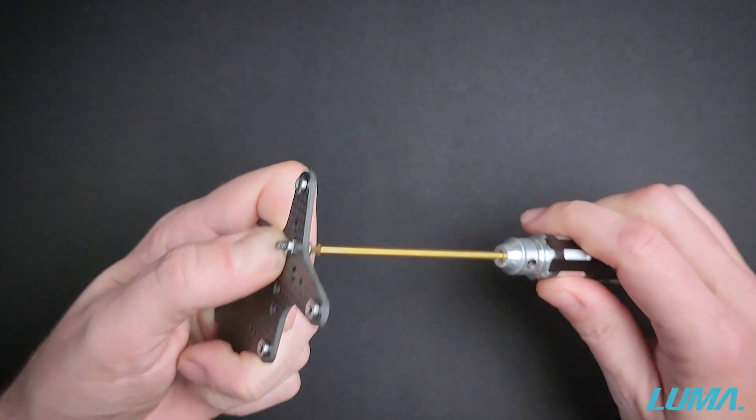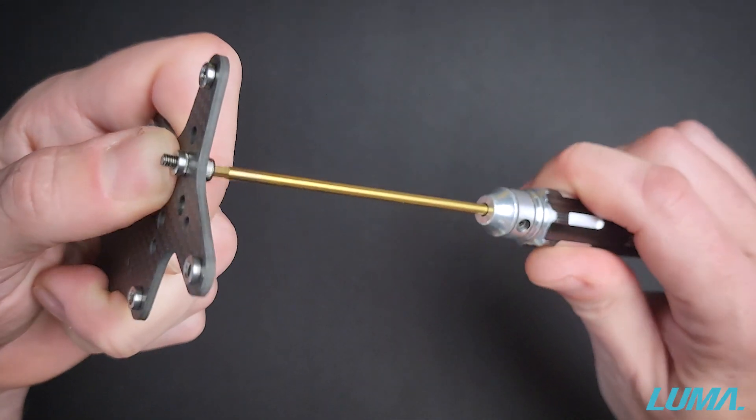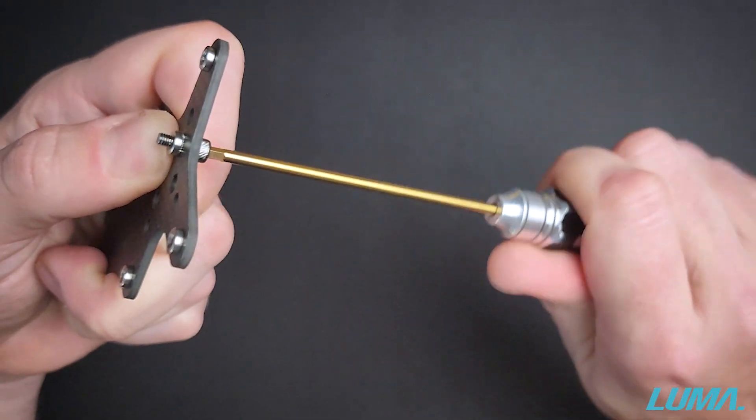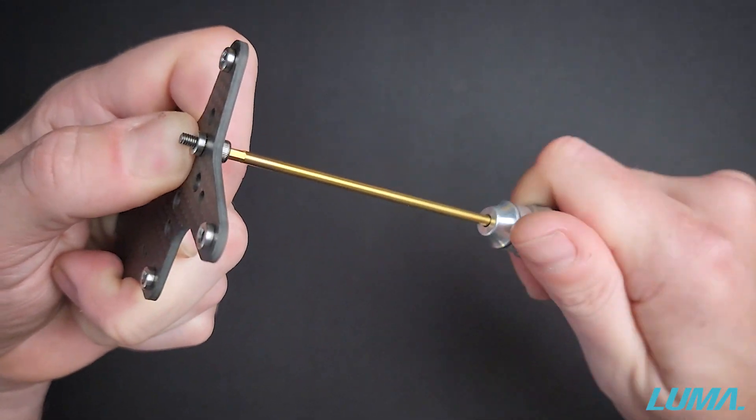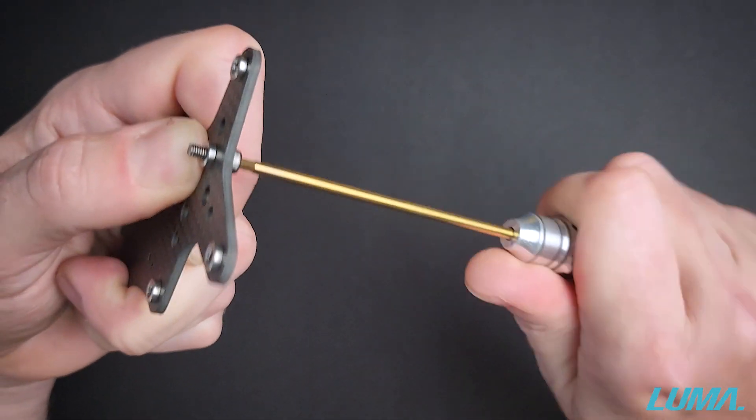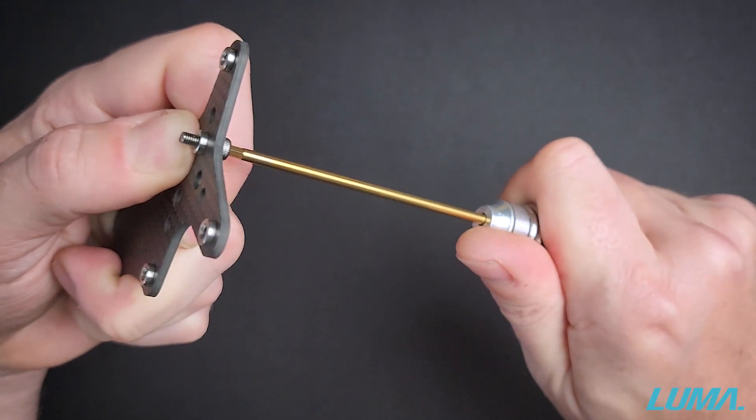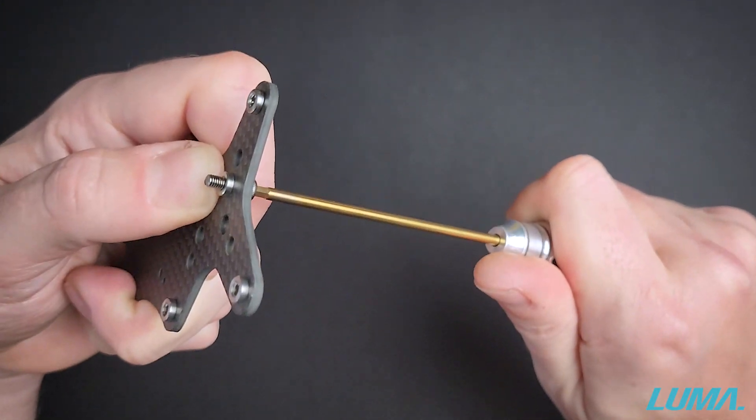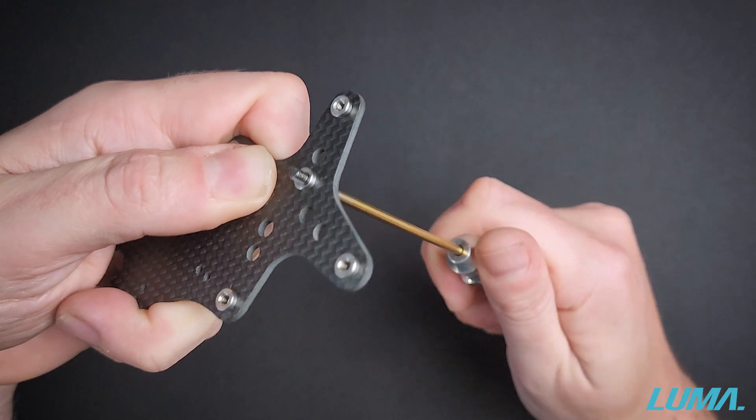Once you get to this point and you can feel it begin to bottom out, you want to then slowly and firmly continue to twist the hex driver and this will pull the press nut into the carbon fiber plate. Once you feel it stop twisting and completely bottom out, that's a correct installation.